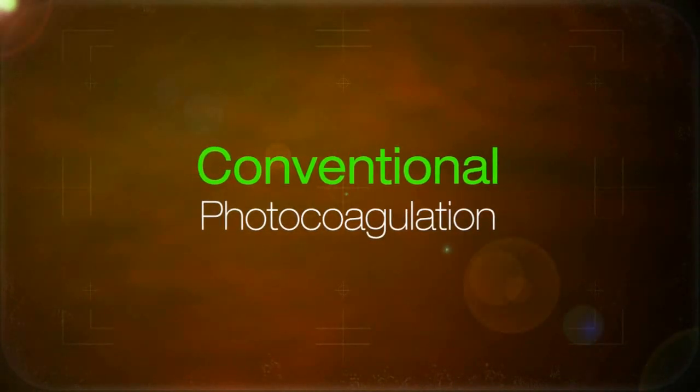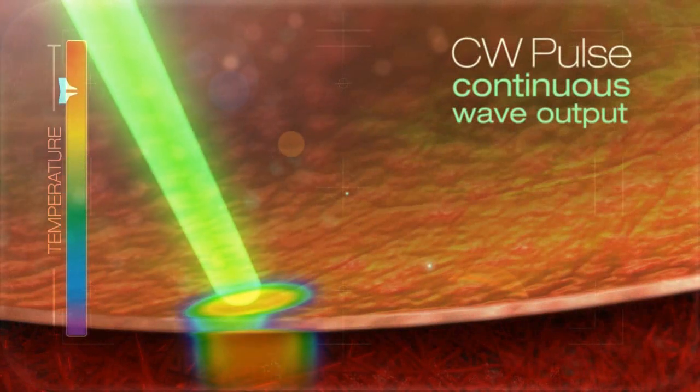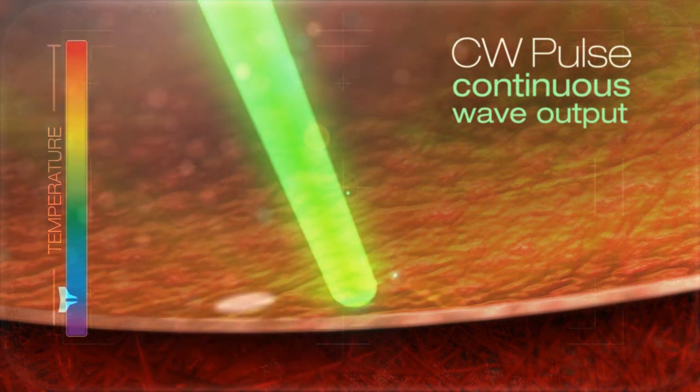In conventional photocoagulation, a CW or continuous wave output is used. Physicians adjust the laser power and exposure times, but even at the lowest levels a rapid temperature rise is seen in the target tissue.